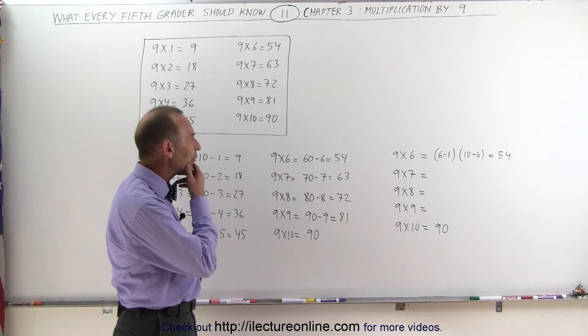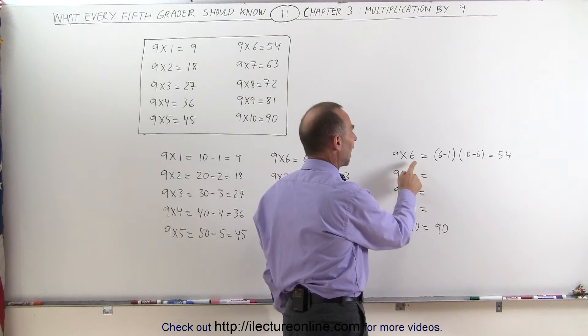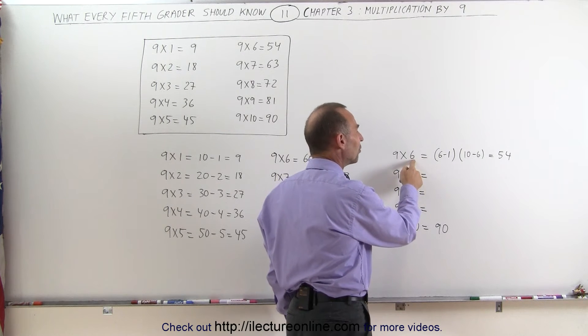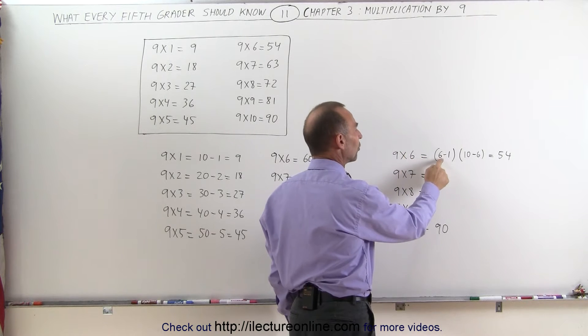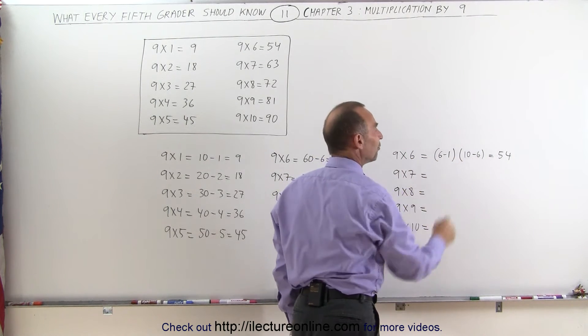And then I even thought of a different way of doing it because then I realized when I looked at 9 times 6, I would subtract 1 from the 6, and then add to that the difference between 10 and 6. So 6 subtract 1 I get 5, and 10 subtract 6 I get 4.